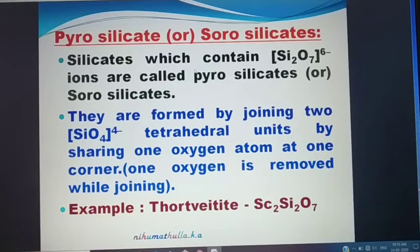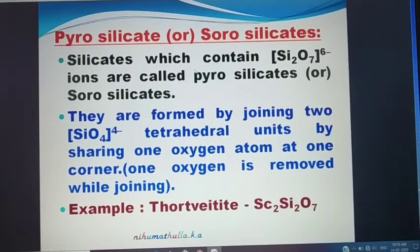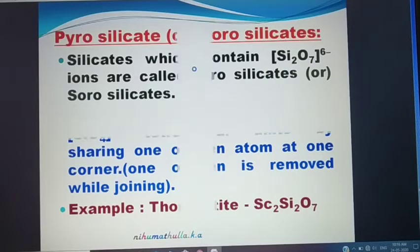Example: thortveitite. The formula is Sc₂Si₂O₇. Why do we put Sc₂ here? It is scandium. We are going to see how the positive and negative ions are neutralized.